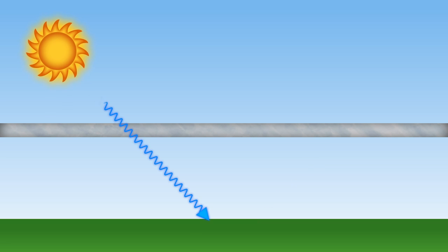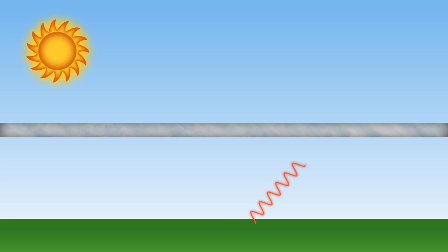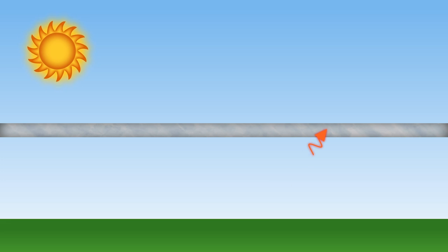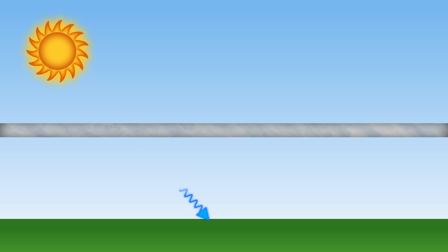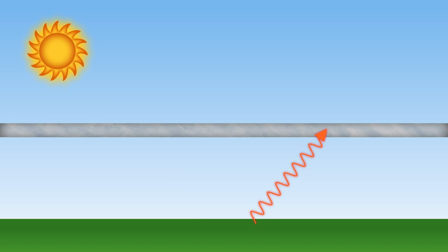Why didn't it get absorbed on the way in? Because the wavelengths are different. The sunlight is mostly optical light, and the radiation that the Earth emits is mainly infrared. Various gases like water vapour and carbon dioxide are very good at absorbing infrared, but they're basically transparent to optical light. It's like a one-way street — or actually like a sheet of glass, because normal glass lets optical light through but absorbs infrared light. It really does behave in much the same way as a sheet of glass.